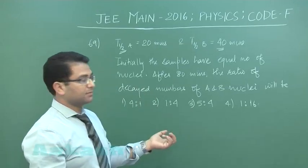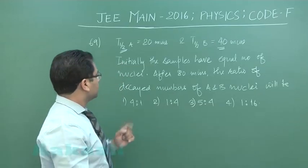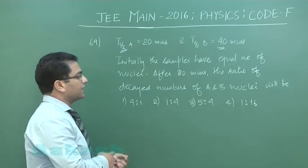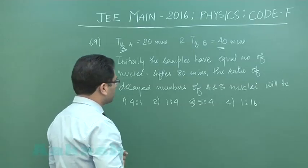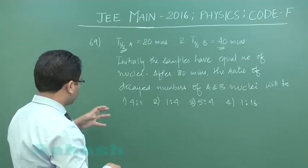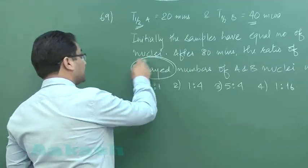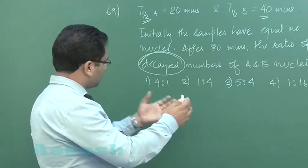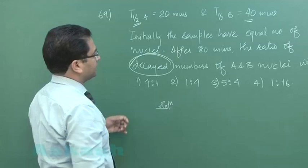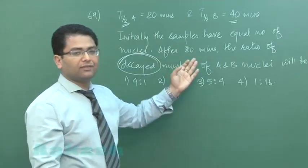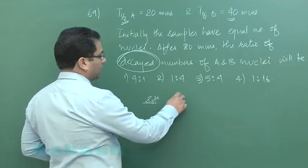After four half-lives of A and after two half-lives of B, the ratio of decayed number of A and B nuclei will be calculated. Here one point you have to be careful - the absence of mind may lead to error because here we have to see the decayed and not the remaining one.